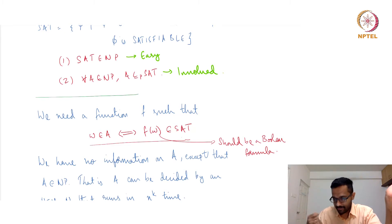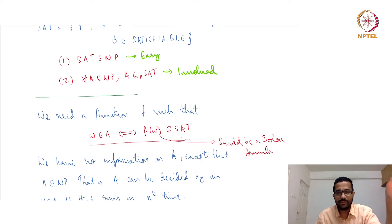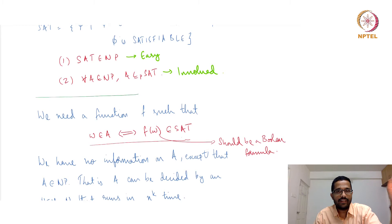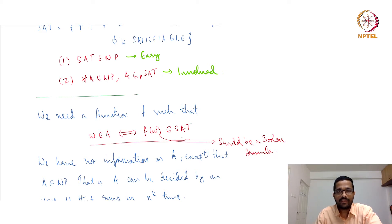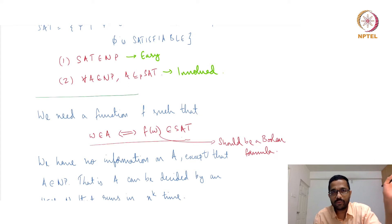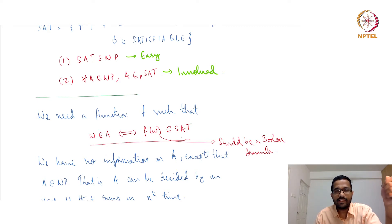You cannot prove each NP language individually — there are infinitely many, including ones we cannot even imagine. We need one general approach: take a general language A in NP and use only the fact that it is in NP to reduce it to SAT. This is what makes the Cook-Levin theorem interesting and seemingly impossible.